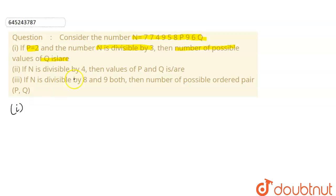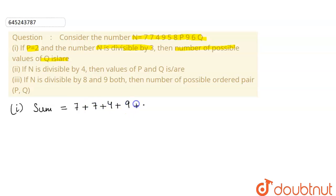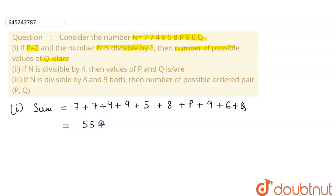We will solve the first part. It is given that this number is divisible by 3, so we apply the divisibility rule of 3, which says that the sum of digits should be divisible by 3. The sum will be 7+7+4+9+5+8+p+9+6+q, which equals 55 plus p plus q. Since p is equal to 2, this becomes 57 plus q.